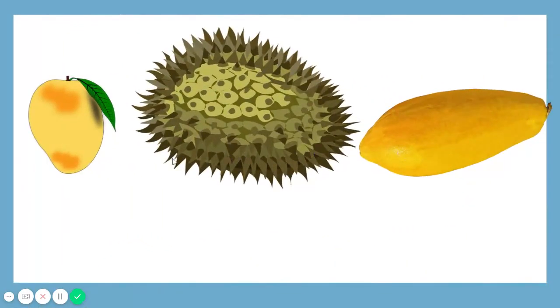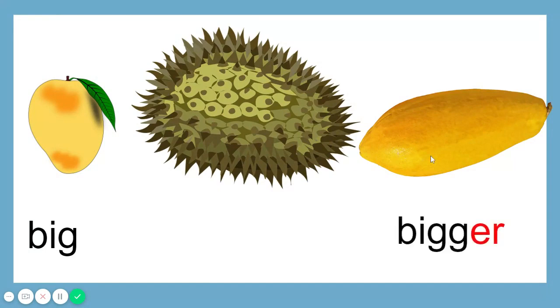I have here three fruits. I have mango, jackfruit, and papaya. Which one is big? Mango is big, papaya is bigger, and jackfruit is the biggest.